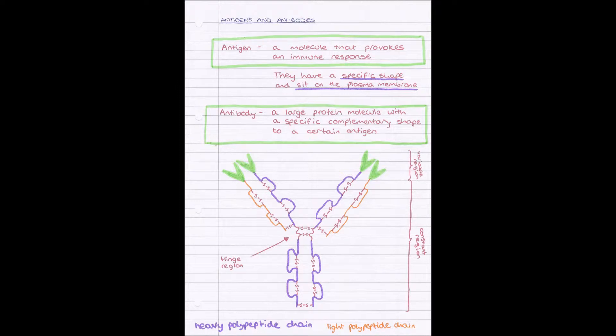That specific shape will provoke an immune response, which like I said we'll come on to later. Next we have antibodies. Now an antibody is a large protein molecule with a specific complementary shape to a certain antigen.